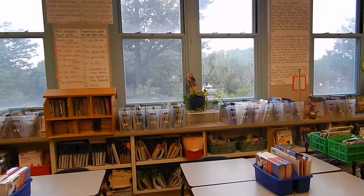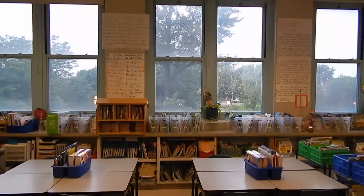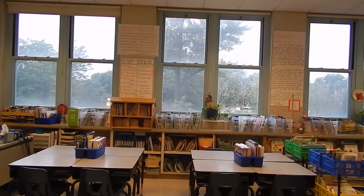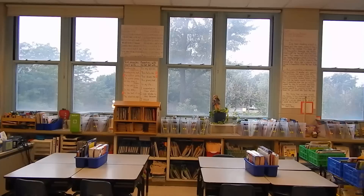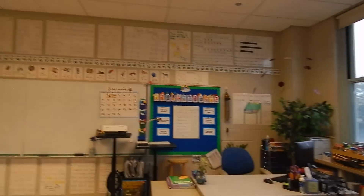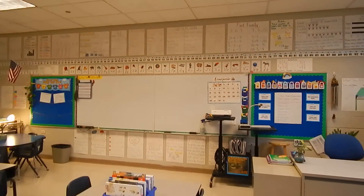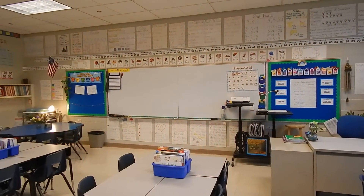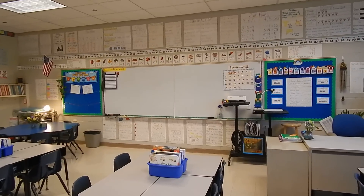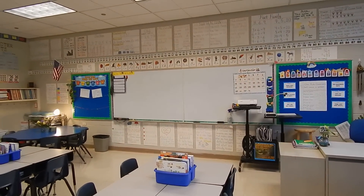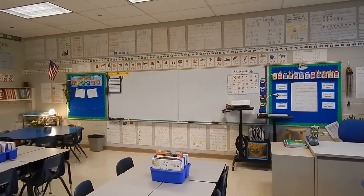If I back up, you can see this is my side of the room where the windows are, and I am lucky enough to face the front of the school, which is quite beautiful. If I pan back over here, you can see the front of the classroom — lots of posters! The alphabet is over the whiteboard, and the number line is on top of that.